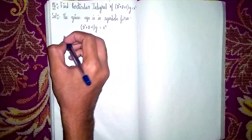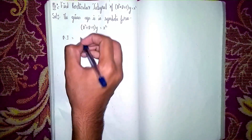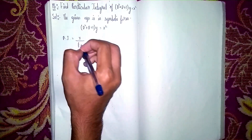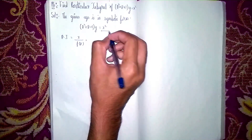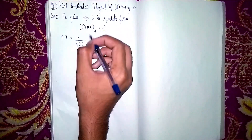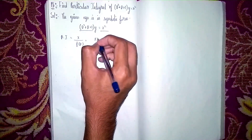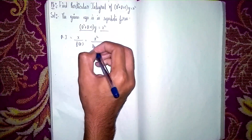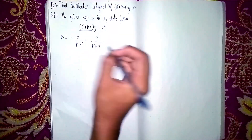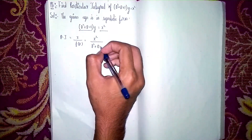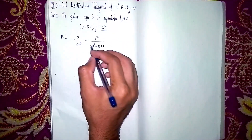Let's try to find the particular integral. PI is equal to x divided by f(D). This is the formula. So f(D) here means D² + D + 1. We write x² divided by D² + D + 1.